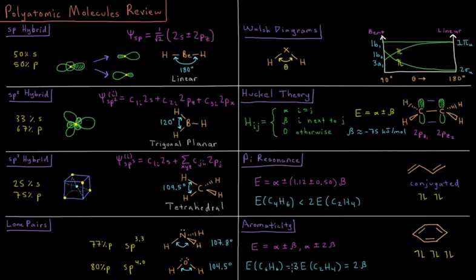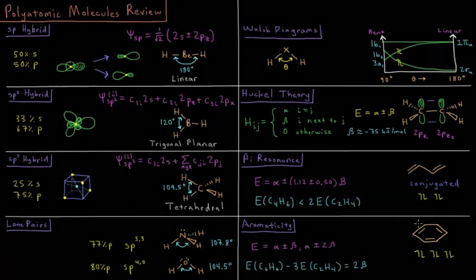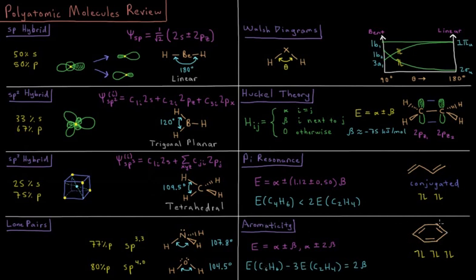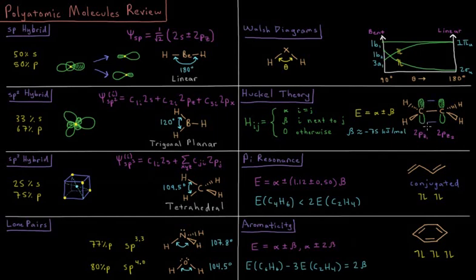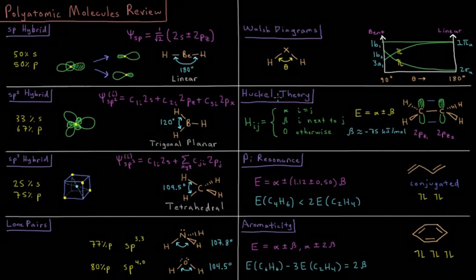And even more so, we observe this in aromatic systems where things like benzene, which is circular, are even much lower than that of three times the energy of an isolated pi bond, due to this special stability occurring in aromatic systems as predicted by Hückel theory.